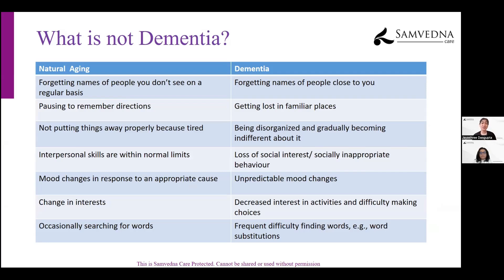This table describes some differences between natural aging and possible signs of dementia. Forgetting names of people you don't see on a regular basis is fairly normal. But in dementia, the person begins to forget the names of people who are close to them — close relatives, friends, people they frequently interact with. That's a warning sign.